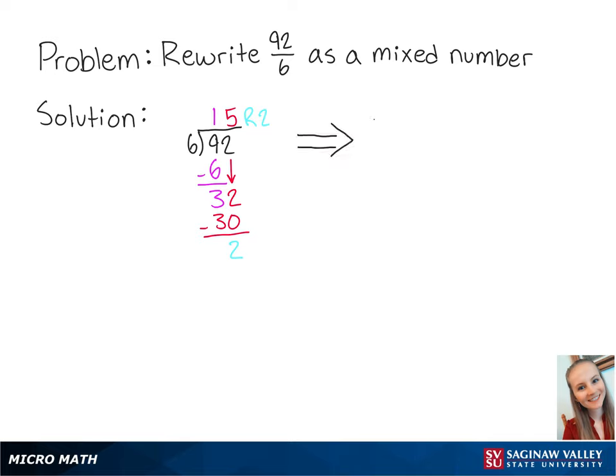This means that 92 sixths is equal to 15 and 2 sixths. After reducing the fraction, this equals 15 and 1 third. This is the final answer.